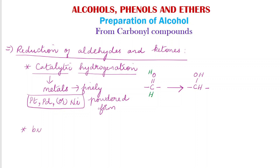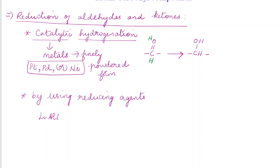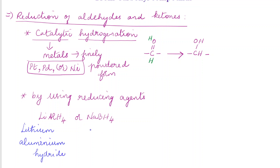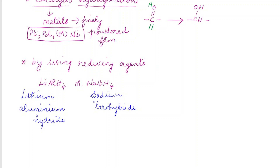The next method is by using a reducing agent. Reducing agents like lithium aluminium hydride (LiAlH₄) or sodium borohydride (NaBH₄) can also be used for the reduction of carbonyl compounds. By using these reducing agents or by catalytic hydrogenation, aldehydes and ketones are converted to their corresponding alcohols.